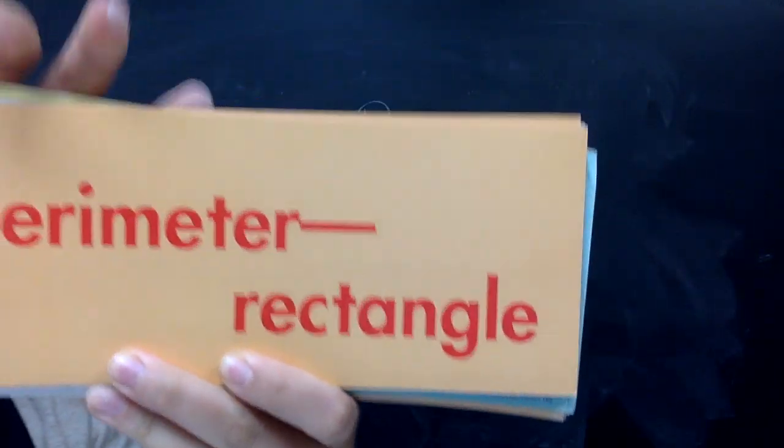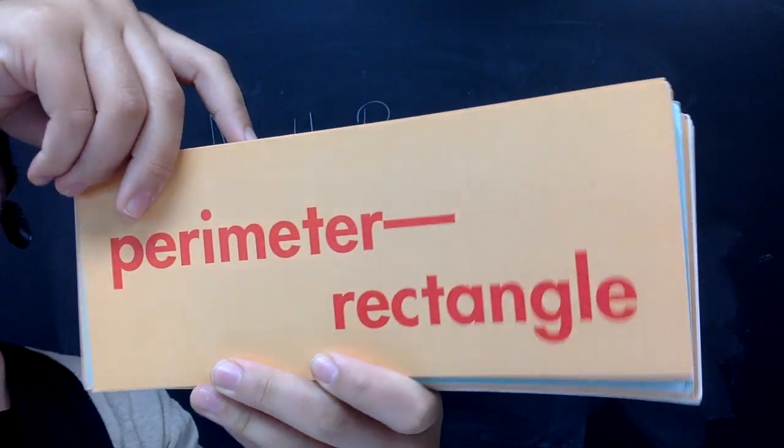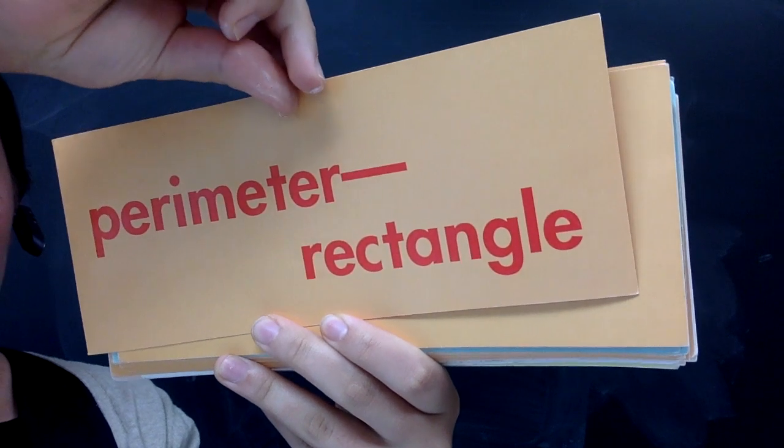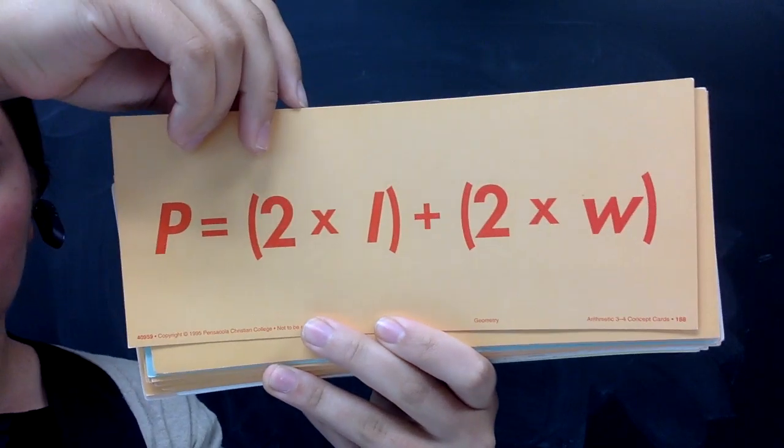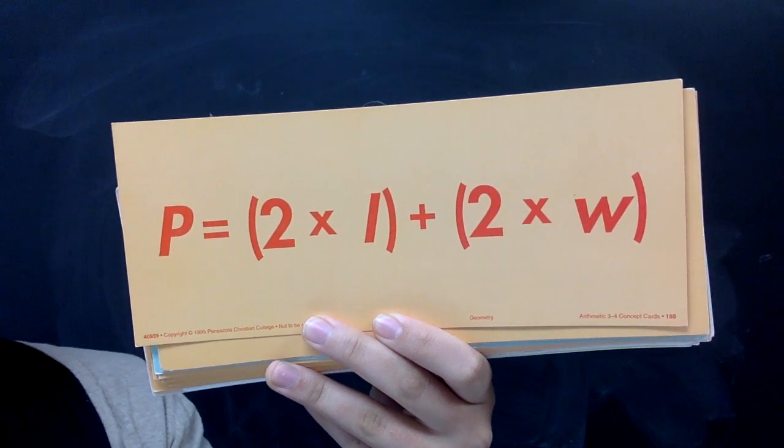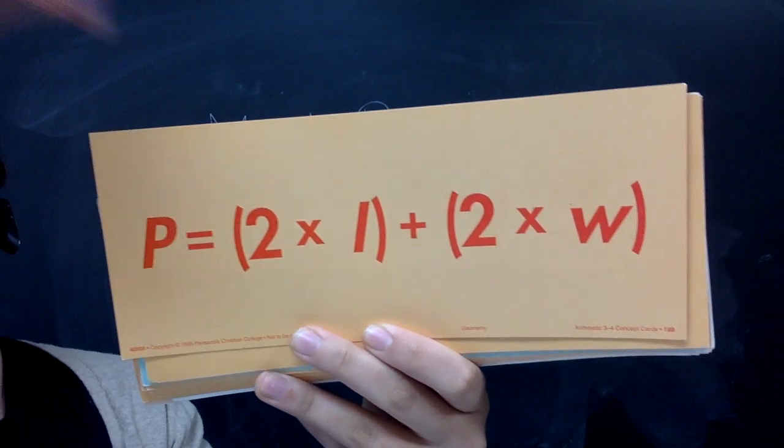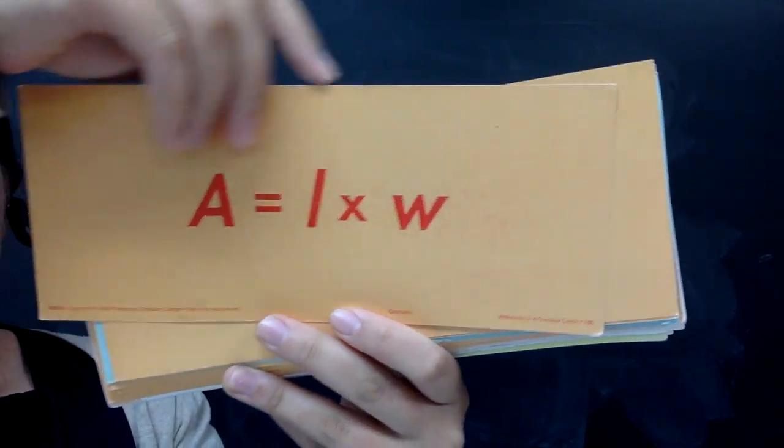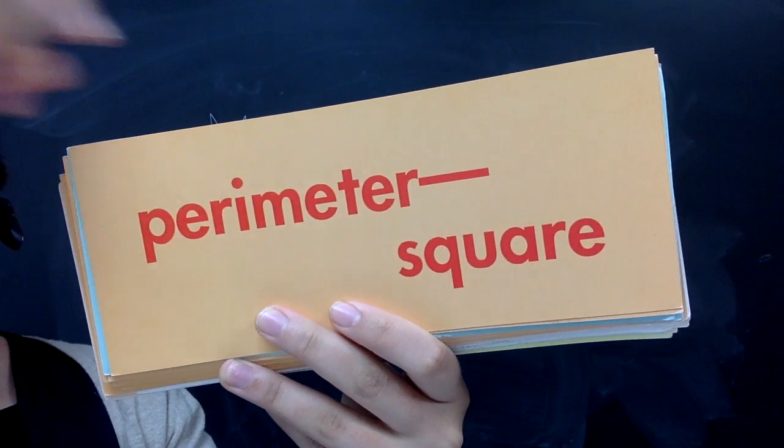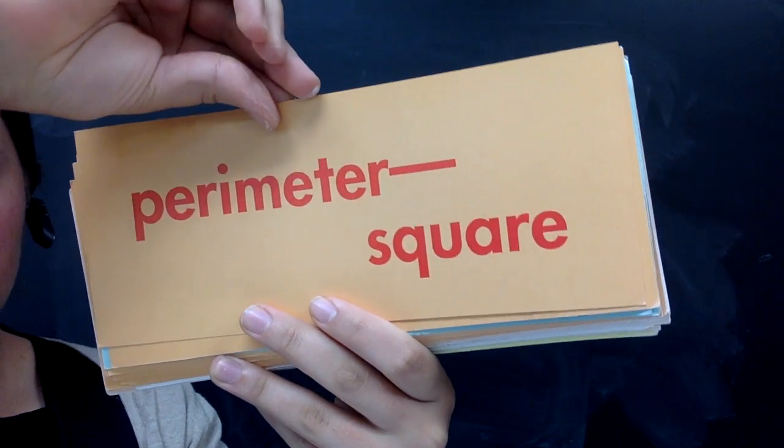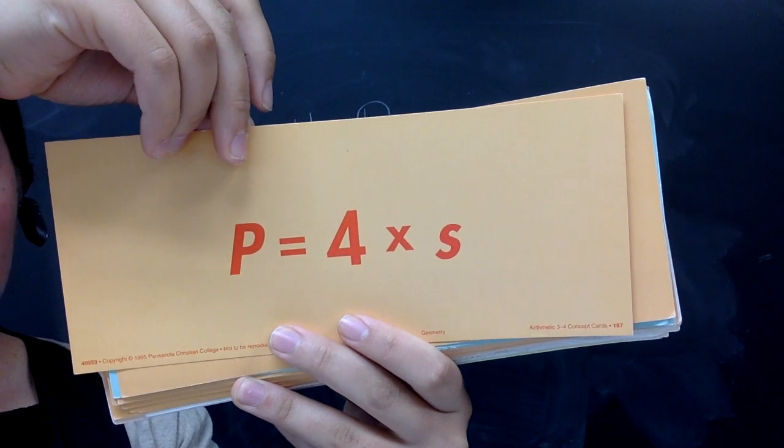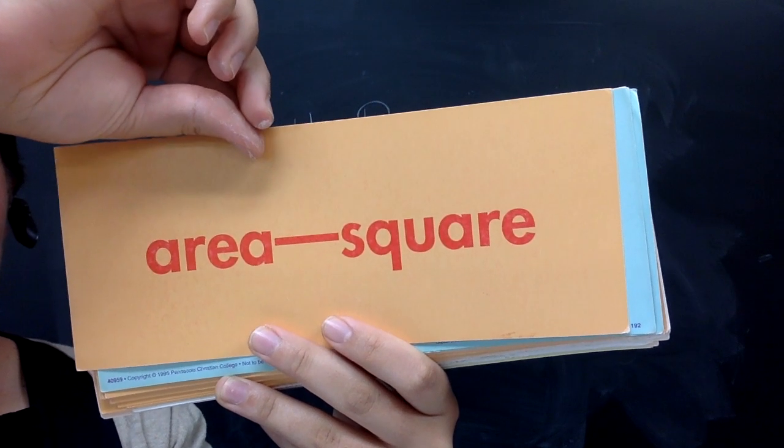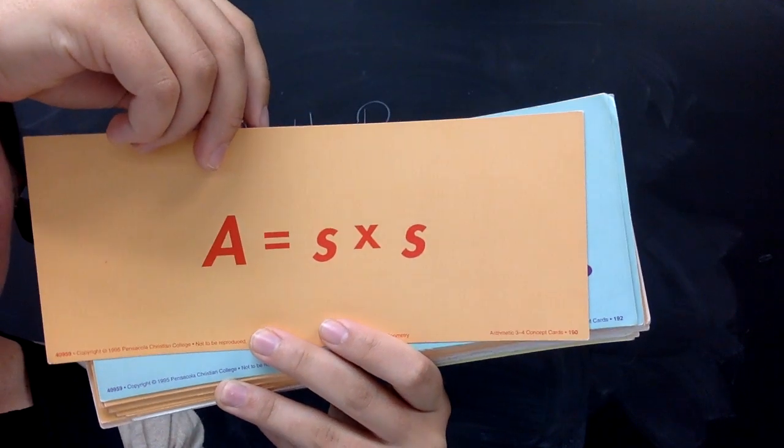So first of all, can you tell me what is the formula for finding the perimeter of a rectangle? Go ahead and answer these the best that you can. Say them out loud. P equals in parentheses 2 times L plus in parentheses 2 times W. Formula for finding the area of a rectangle. A equals length times width. Formula for finding the perimeter of a square. P equals 4 times S. Formula for finding the area of a square. A equals S times S.